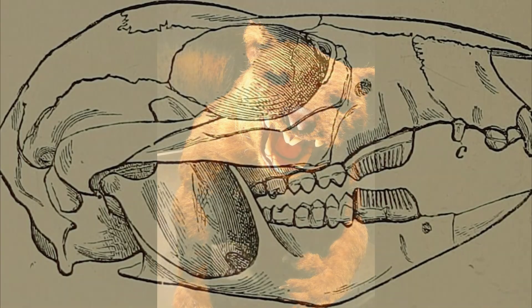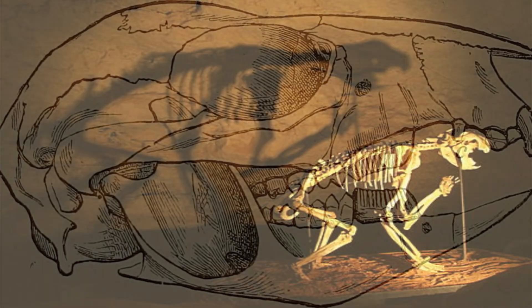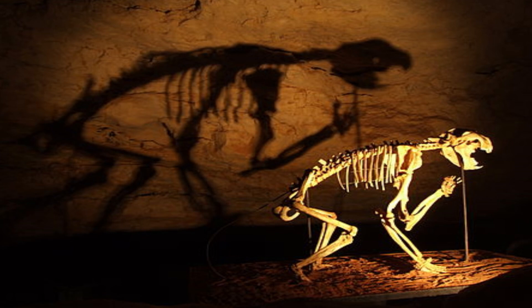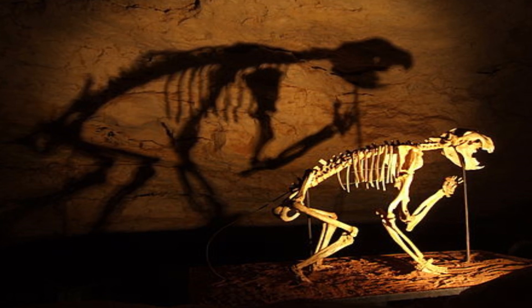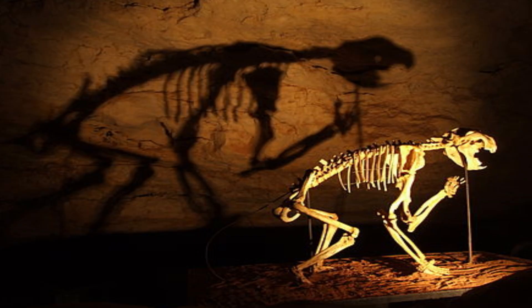Unlike modern big cats, Thylacoleo had blade-like premolars designed for slicing flesh, making it a highly efficient hunter. Weighing between 100 to 130 kilograms and equipped with muscular forelimbs, it could ambush prey from above or engage in powerful frontal attacks.